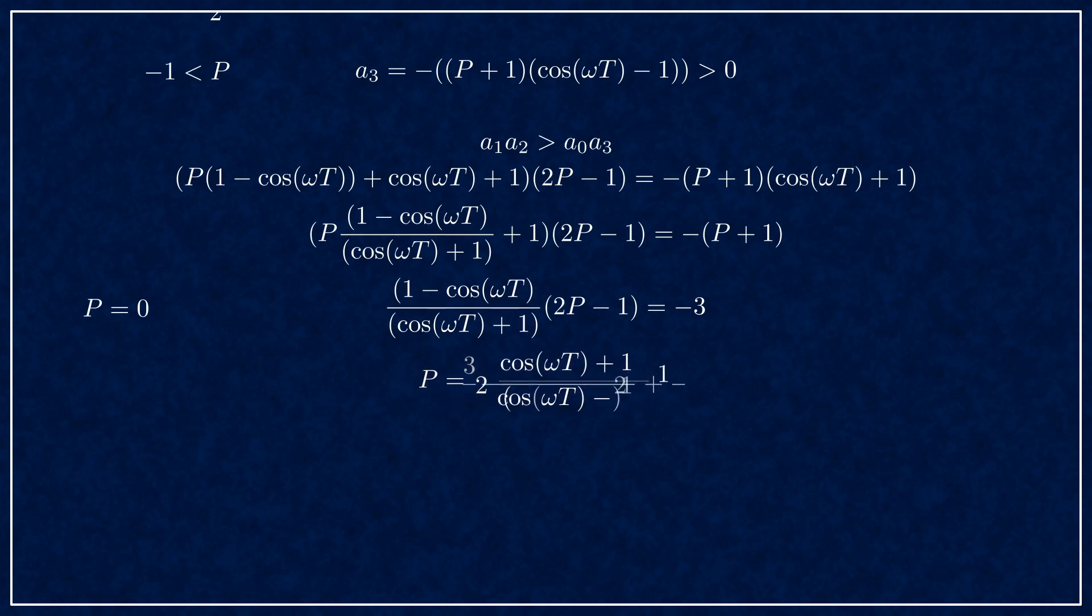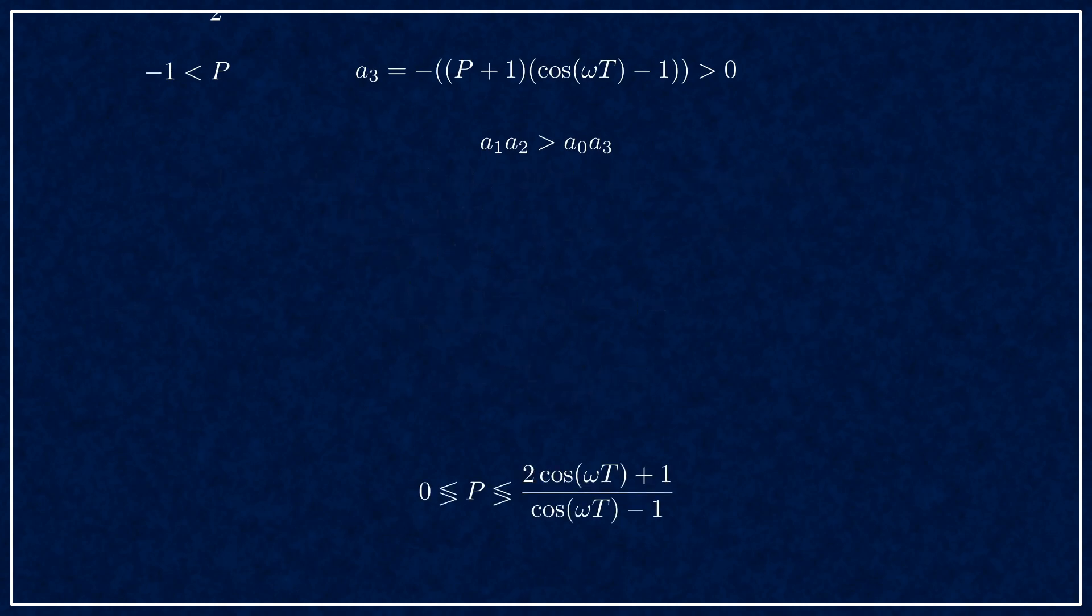Then you work all the terms to the right, and you get p equals 2 times cos omega t plus 1 over cos omega t minus 1. If you do the proper derivation with the inequality, the solution is that p must lie between 0 and this rational function, both when it is positive and when it is negative.